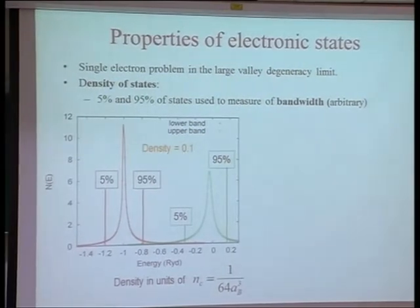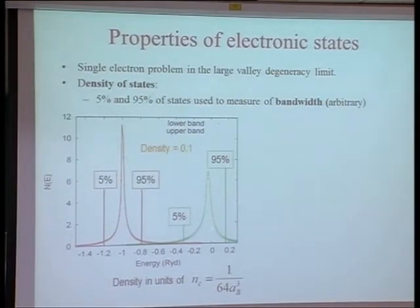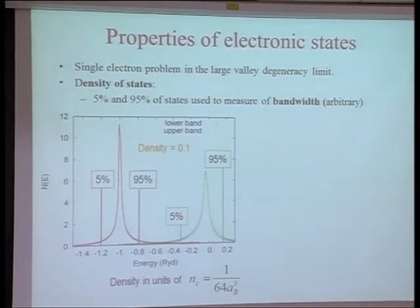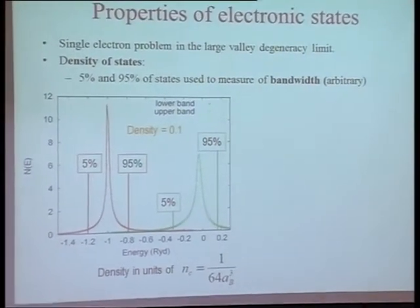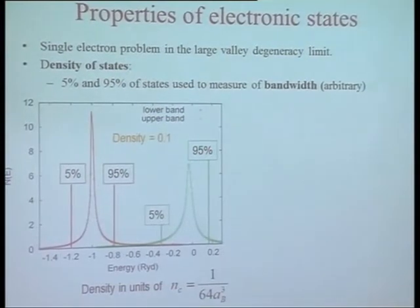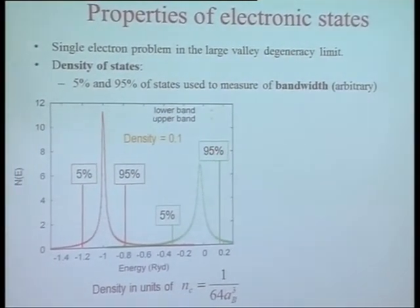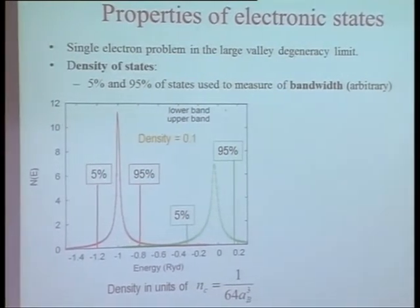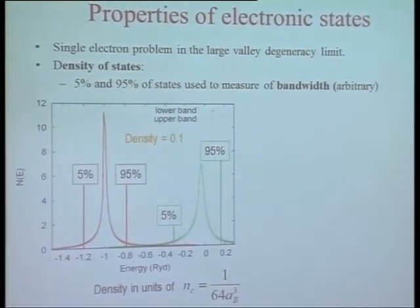Here is the density in units of the Mott density — a tenth of the Mott density. This is the density of states of the lower Hubbard band. You can see the upper Hubbard band is broader, and these are the 5% and 95% points. Because this is randomly distributed, there are long tails, so we will use the 5% and 95% occupation as denoting the nominal band edges for the two bands.